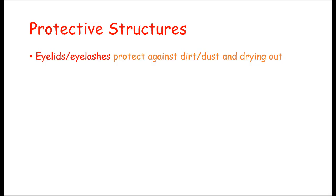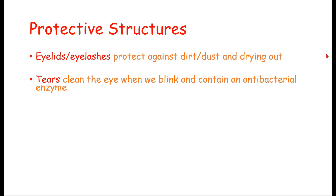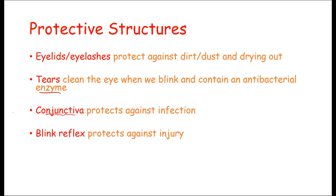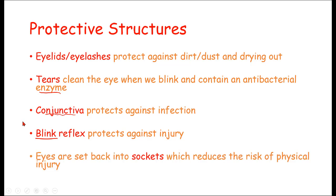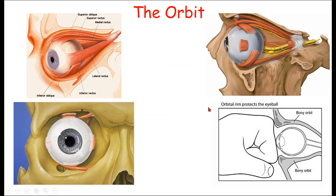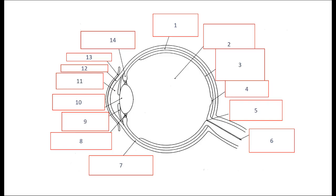It's very important to protect the eye from damage. Eyelids and eyelashes protect against dirt or dust. Tears clean the eye when we blink and contain enzymes that kill bacteria. The conjunctiva protects against infection and protects the cornea. The blink reflex protects against injury — if something is about to hit your eye, you close it automatically. Eyes are also set back in bony sockets called orbits, which reduces the risk of physical injury.